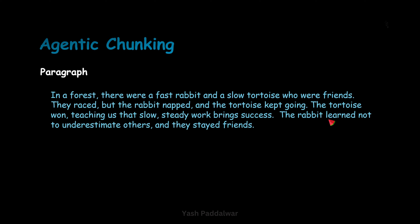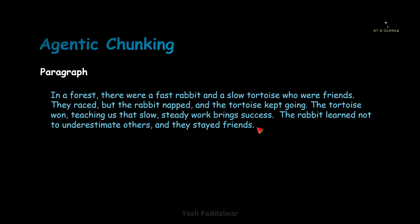Similarly, if you look at the last statement — 'the rabbit learned not to underestimate others and they stayed friends' — over here also we can see a pronoun is used: 'they stayed friends.' If this particular statement becomes independent from the previous statements, then we cannot understand to whom it is addressing. So these are not propositions — they are not independent statements, they are not complete statements. Agentic chunking strategy makes every single statement a proposition. It will create each statement in such a way that it will become independent, so that we can further use it to create chunks or simply keep it as separate chunks.